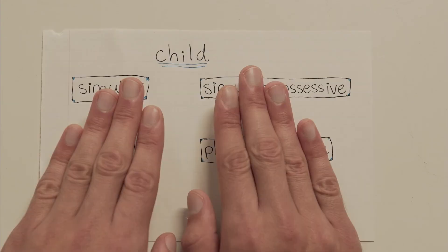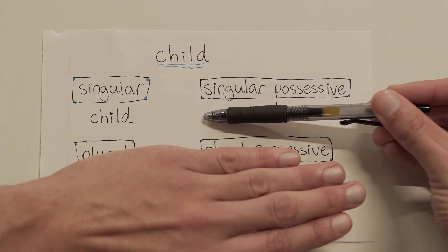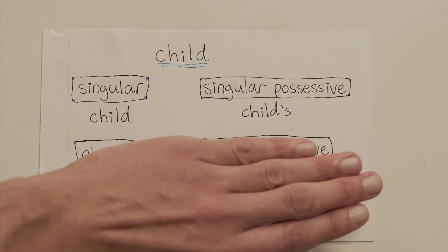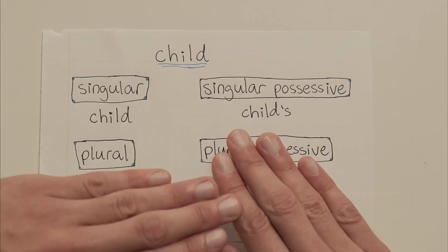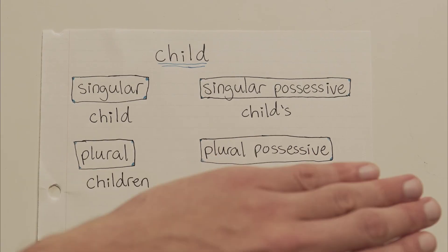Last one — child. The basic singular form is just child. The singular possessive form, that one child owns something, is child apostrophe s. The basic plural form, regular plural, not possessive, is children. Now, for the plural possessive form of child, watch out — be careful. We've got a plural word that doesn't end with an s, so for our plural possessive, we can't just add an apostrophe to the end. We've got to roll with the singular rule and add apostrophe s. So it's children's, like this.